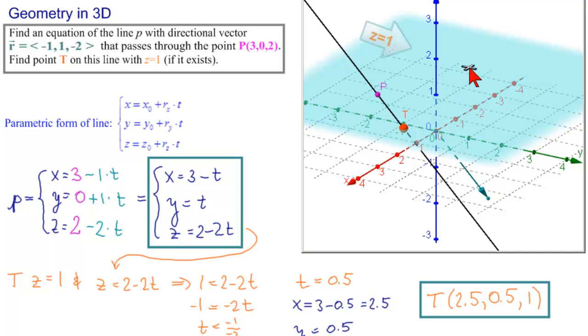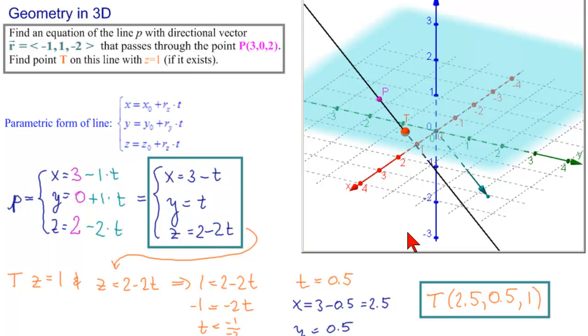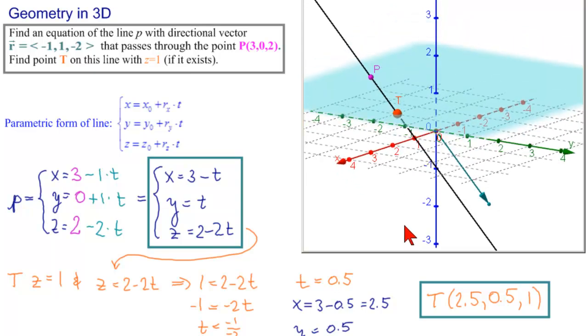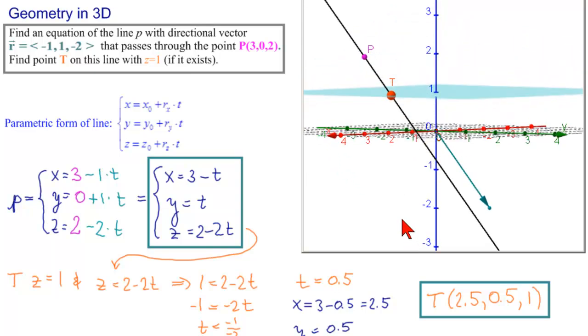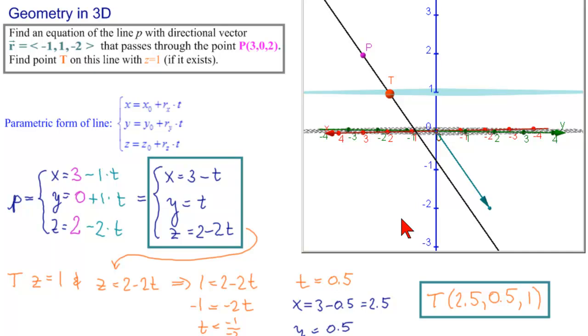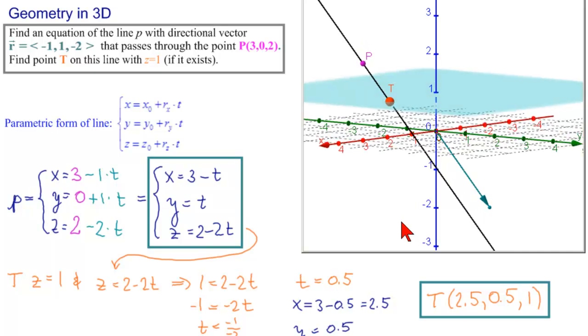This is the plane z equals 1. And now let's rotate this so we can see that it is indeed z equal to 1. It is the point where the line meets the plane z equal to 1.